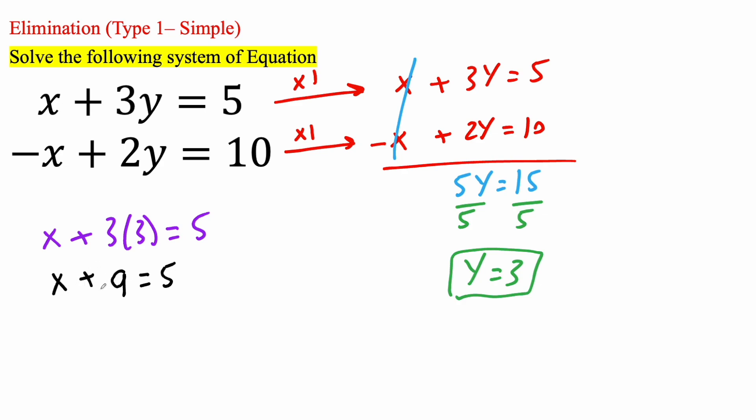And if we want to get x by itself, we need to get rid of this plus 9. And the opposite of plus 9 is minus 9 minus 9. And so we're going to get x is equal to 5 minus 9 is going to be negative 4.